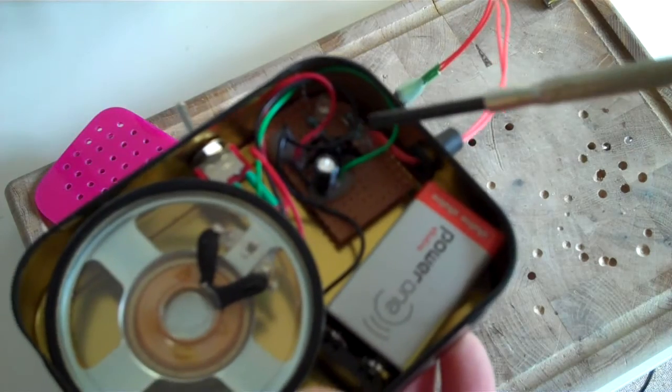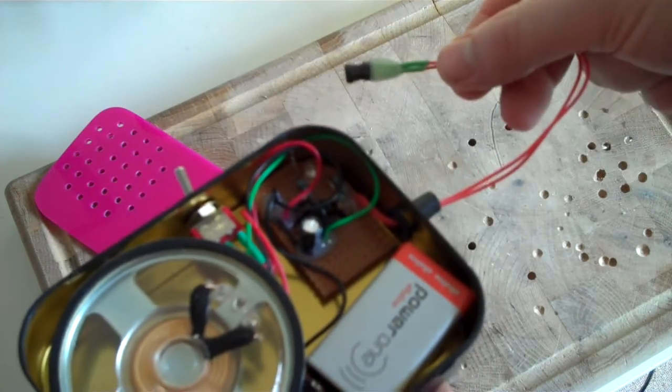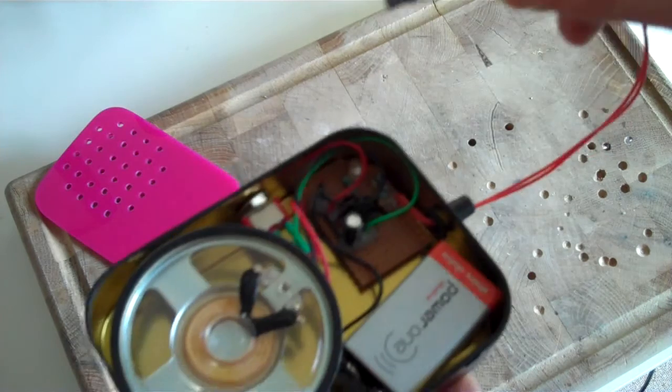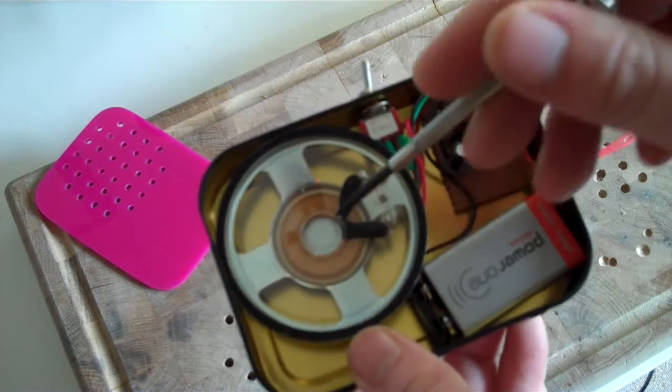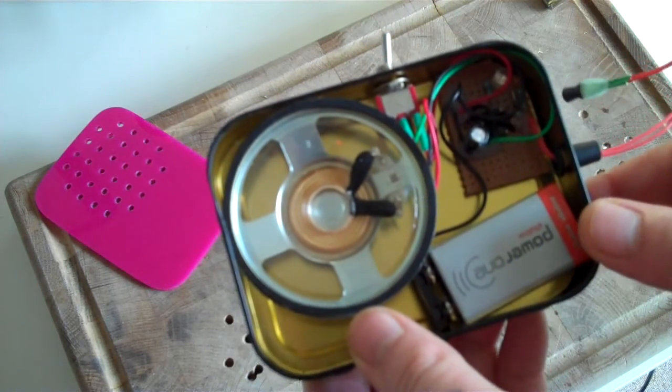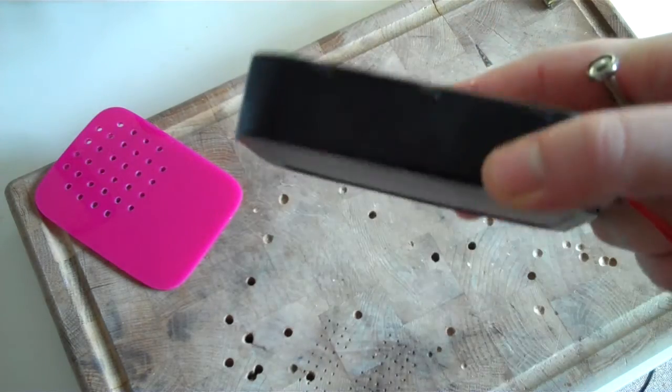So I use both stages to amplify the tiny signals that impinge on this inductor, and then it just goes straight to the speaker there. And I've just got it inside of a tobacco tin.